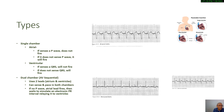There is also a dual chamber pacemaker, where electrical activities are directed at both the atria and the ventricles. It uses two leads — one in the atrium and one in the ventricle — and can sense and pace in both chambers. If there is no P-wave, the atrial lead fires, then waits to stimulate an electrical PR interval, relaying it to the ventricles, mimicking normal conduction from the AV node into the ventricles.